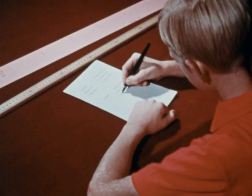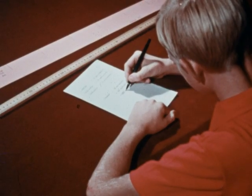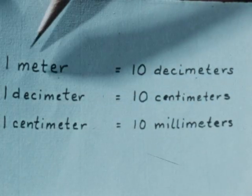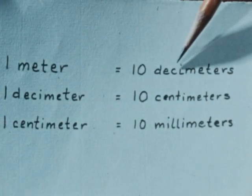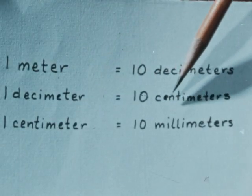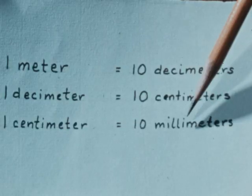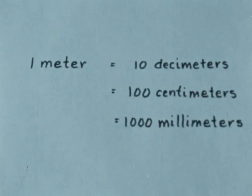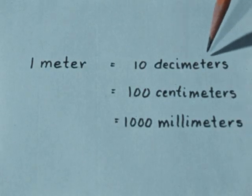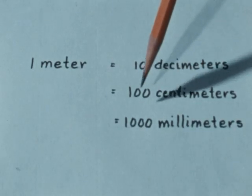Jim now makes a chart showing the relationships between decimeters, centimeters, and millimeters on the meter stick. One meter equals ten decimeters. One decimeter equals ten centimeters. One centimeter equals ten millimeters. To put it another way: one meter is equivalent to ten decimeters, or one hundred centimeters, or one thousand millimeters.